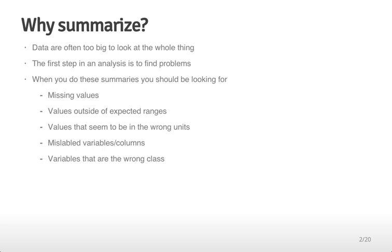When you do these summaries, some things you might be looking out for are missing values and values that are outside of the expected ranges. For example, if you're measuring temperature in Celsius in Baltimore and you see a measurement of 250, that's probably a little bit high. And lest you think those sorts of things never happen, there's almost always at least one or two crazy values in every data set.